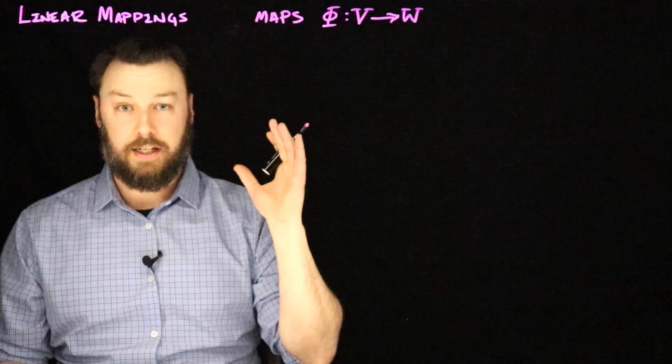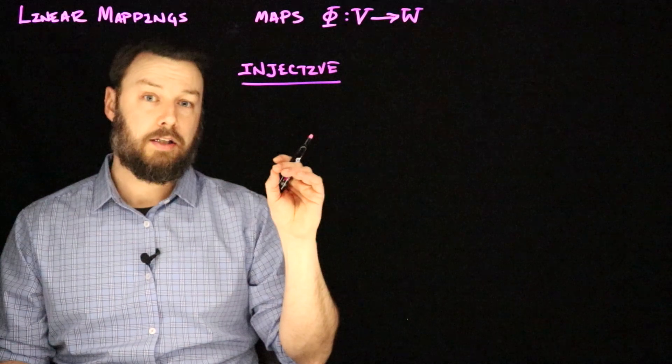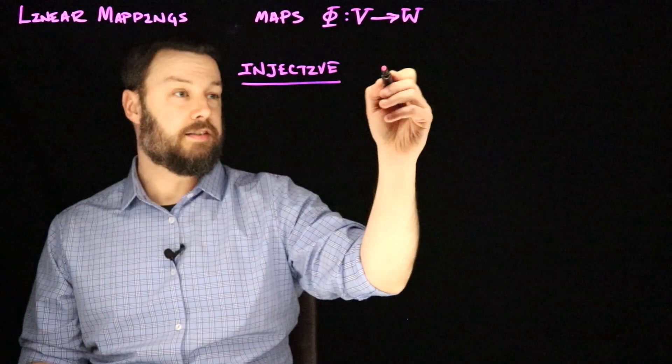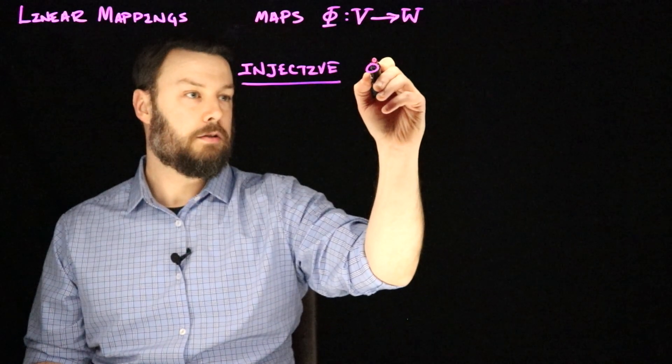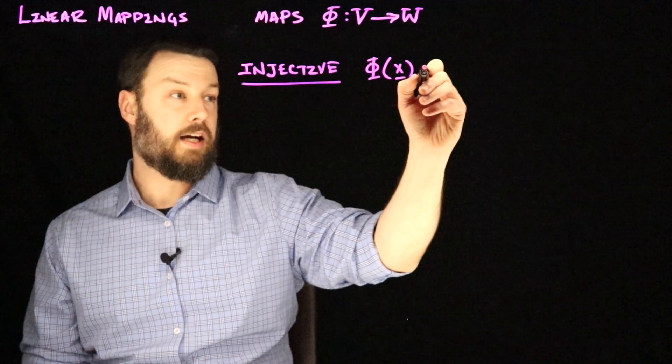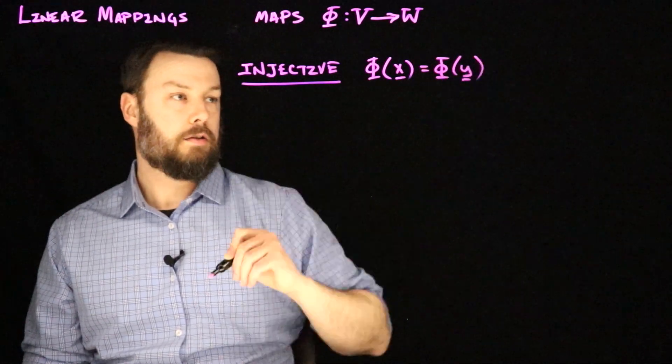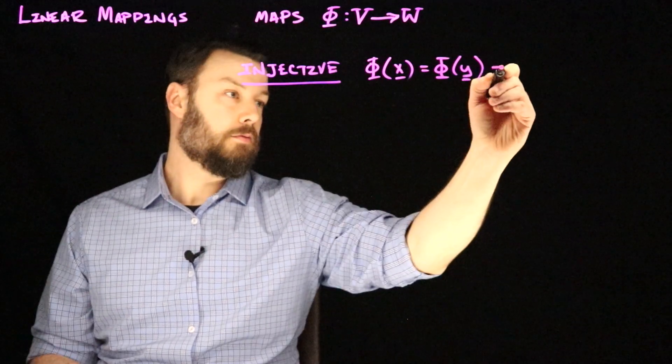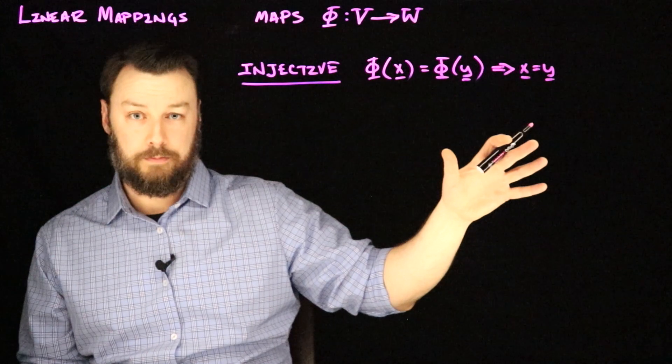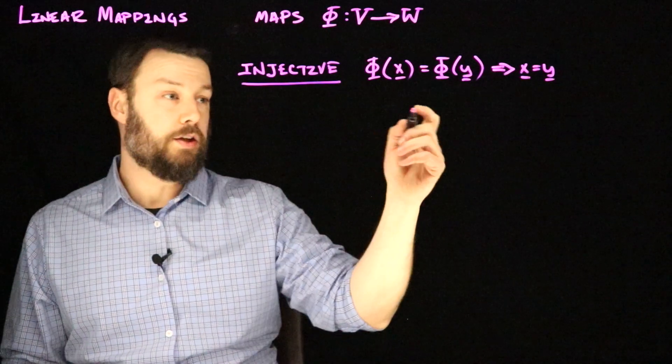First thing is an injective map. An injective map has the property that it doesn't take multiple elements in V and collapse them into a single element in W. That is to say that if I have a Phi applied to an X and I discover that that is equal to a Phi of Y, then that means that X and Y must have been equal. So if the place they land is the same, then that means that they couldn't have come from different places. So sometimes we call an injective map one to one.